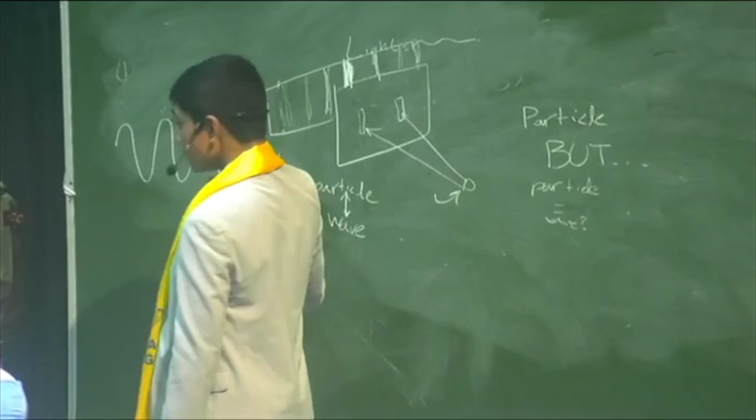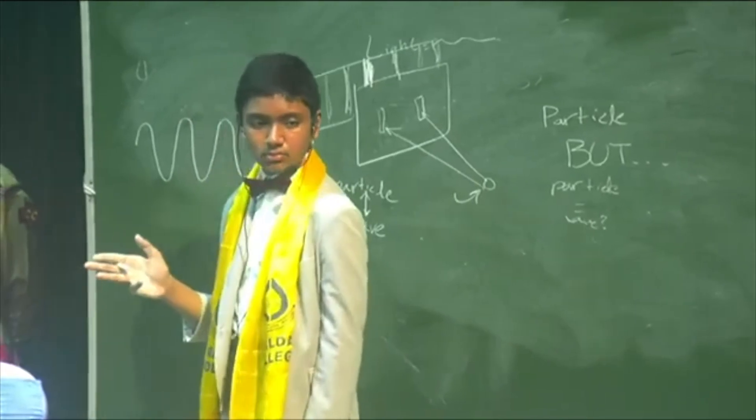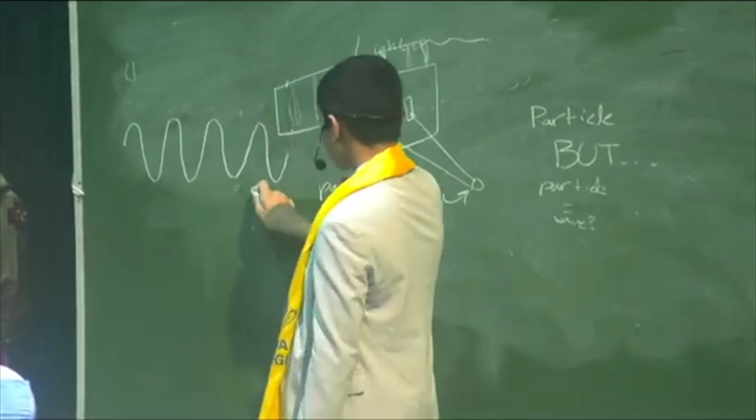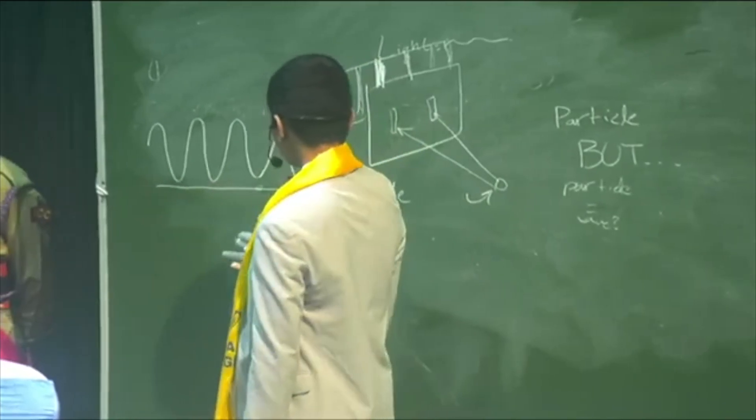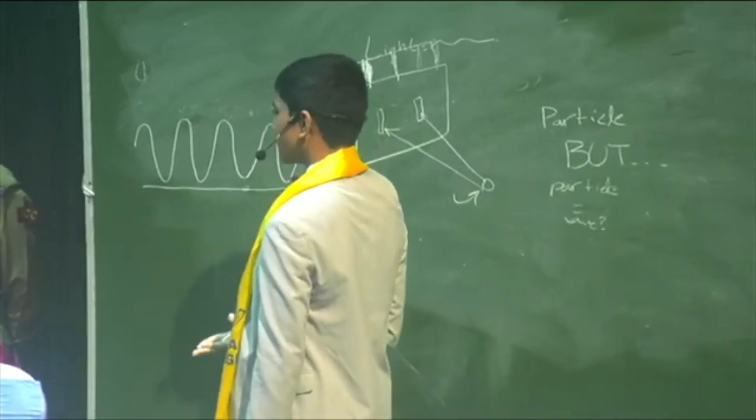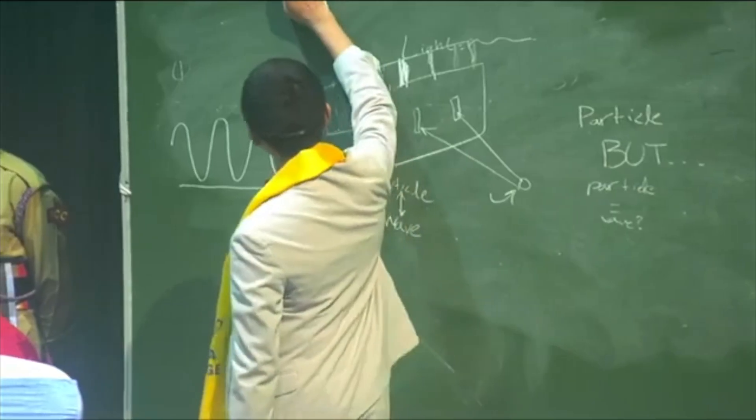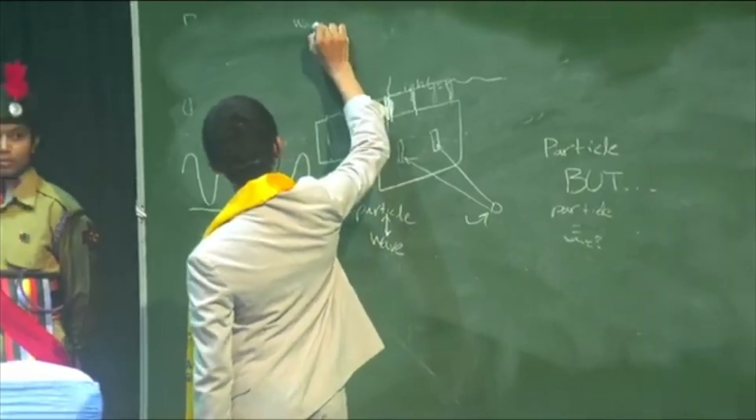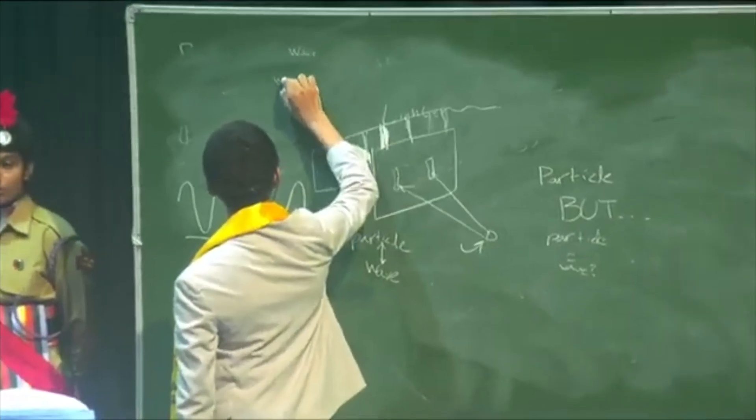When you zoom in very far, you can see that essentially on a lower level, every particle kind of is a wave. So in some sense, you can say everything is a wave, but some waves are more wavy than others.